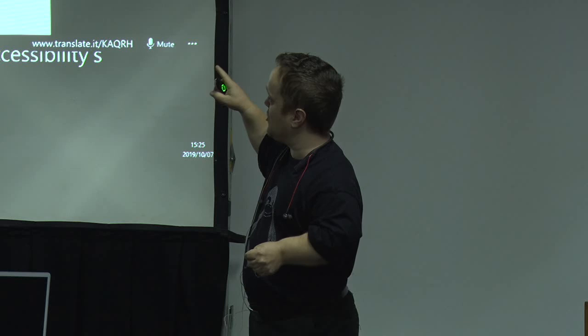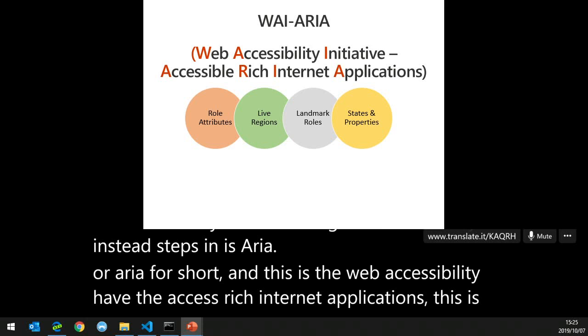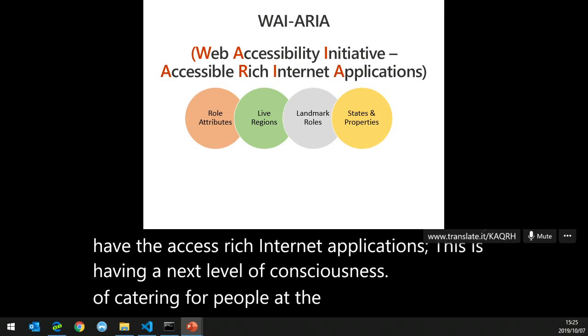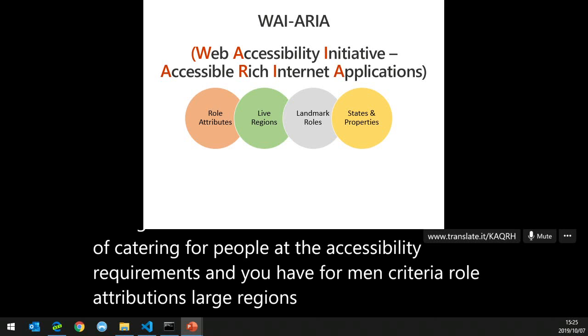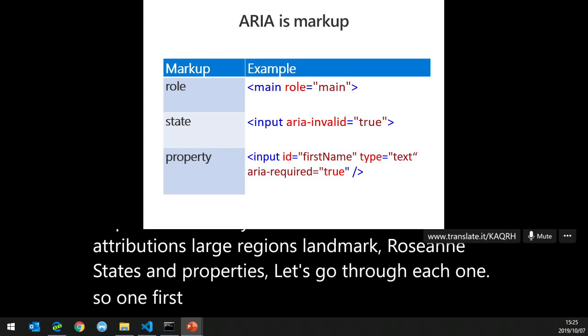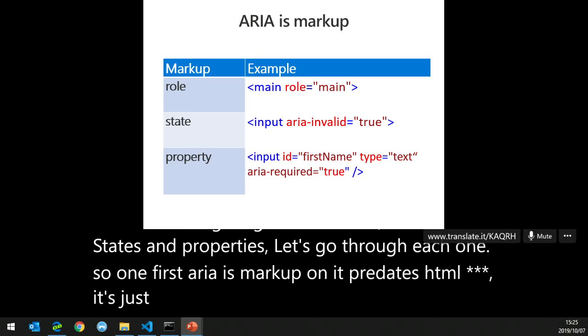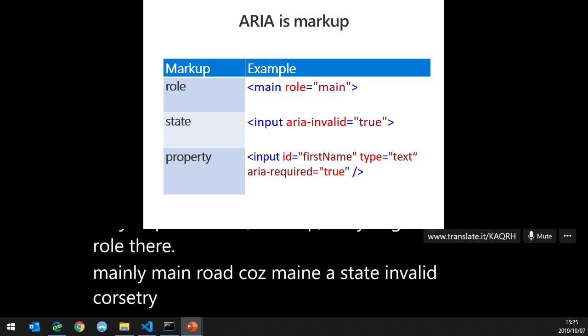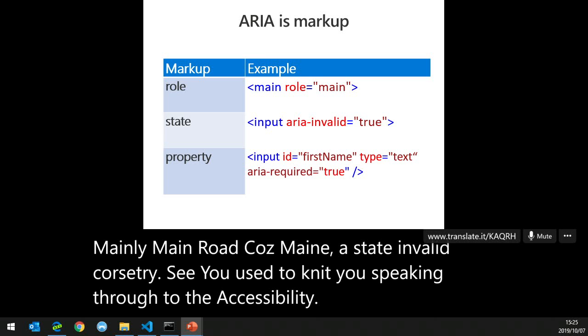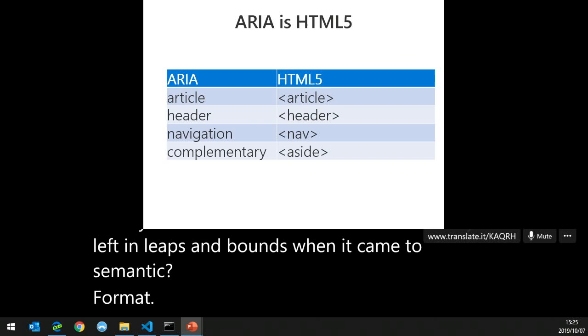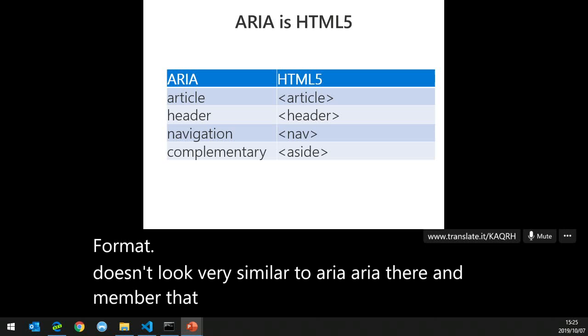ARIA — the Web Accessibility Initiative – Accessible Rich Internet Applications — is a next level of consciousness for catering for people with accessibility requirements. There are four main criteria: role attributions, live regions, landmark roles, and states and properties. ARIA is just plain HTML markup — it predates HTML5. You have a role like 'main', a state like 'invalid equals true', and a property like 'aria-required'. Have you wondered how HTML5 suddenly leapt forward in semantic formatting? It looks very similar to ARIA because it was inspired by it.